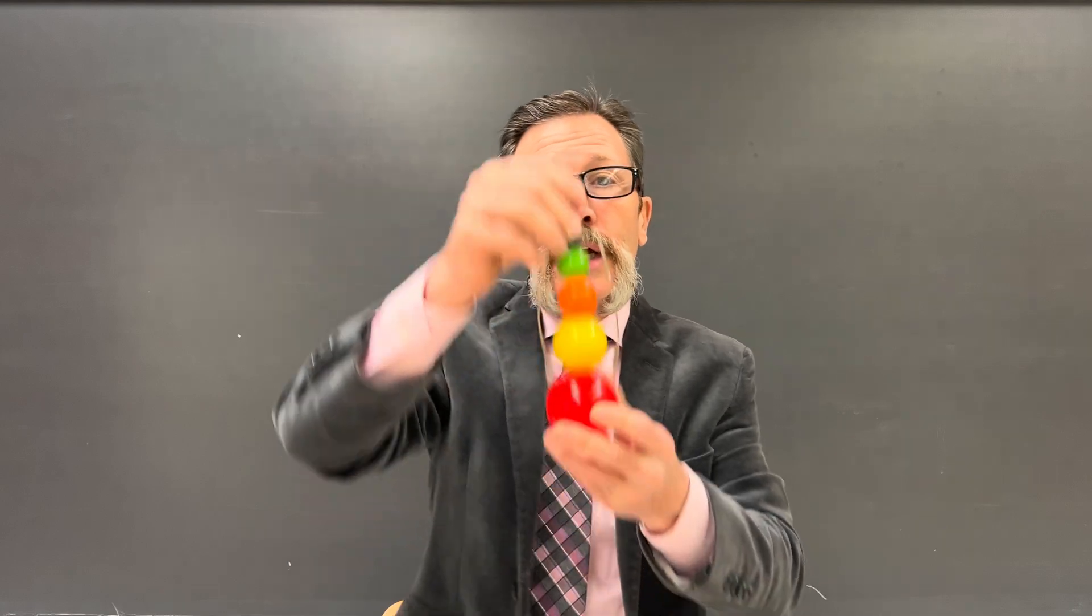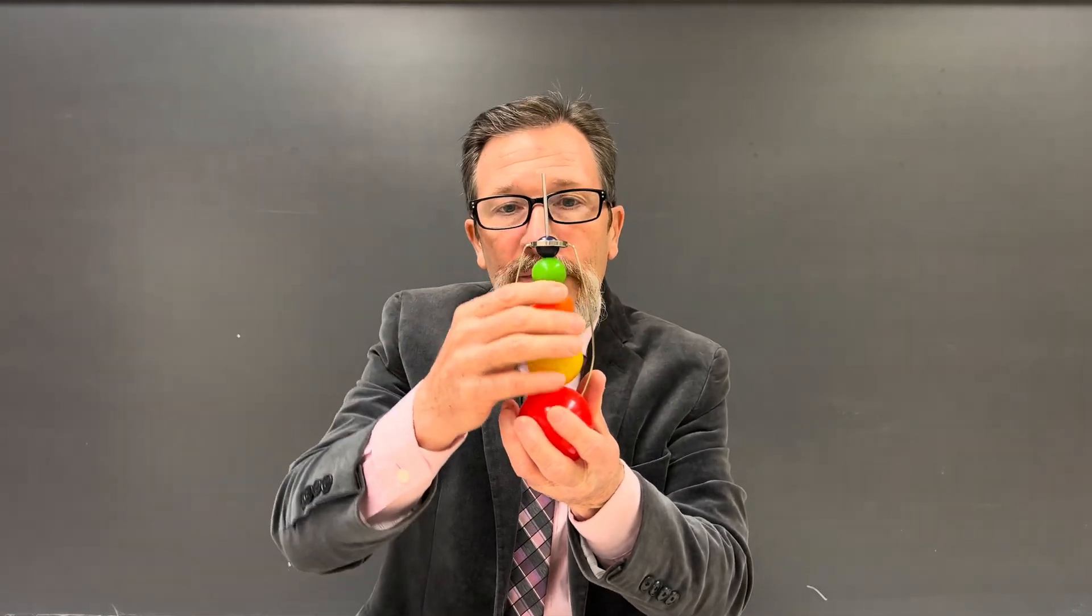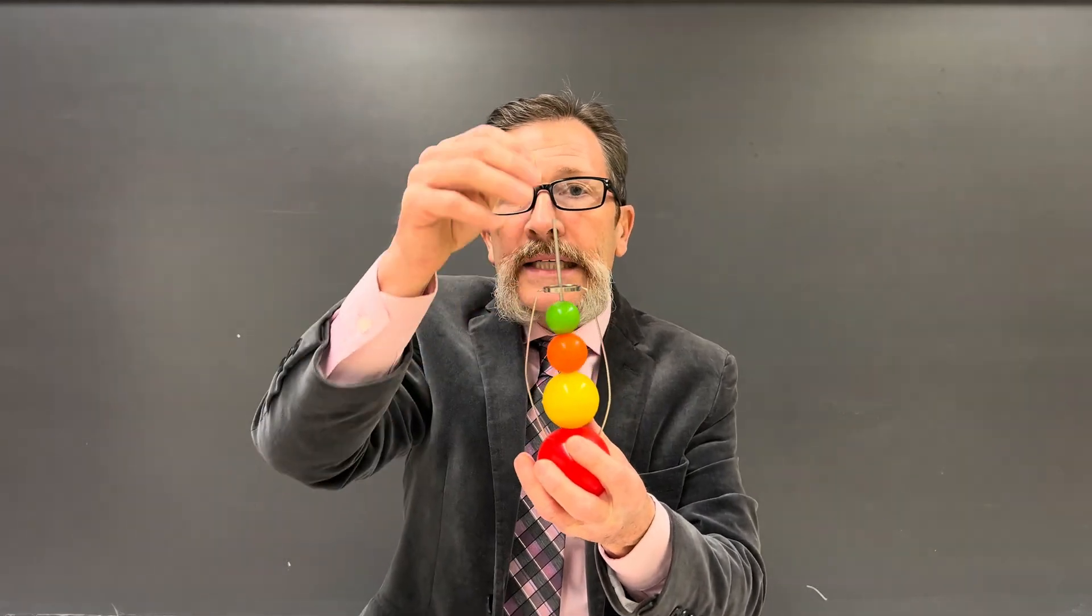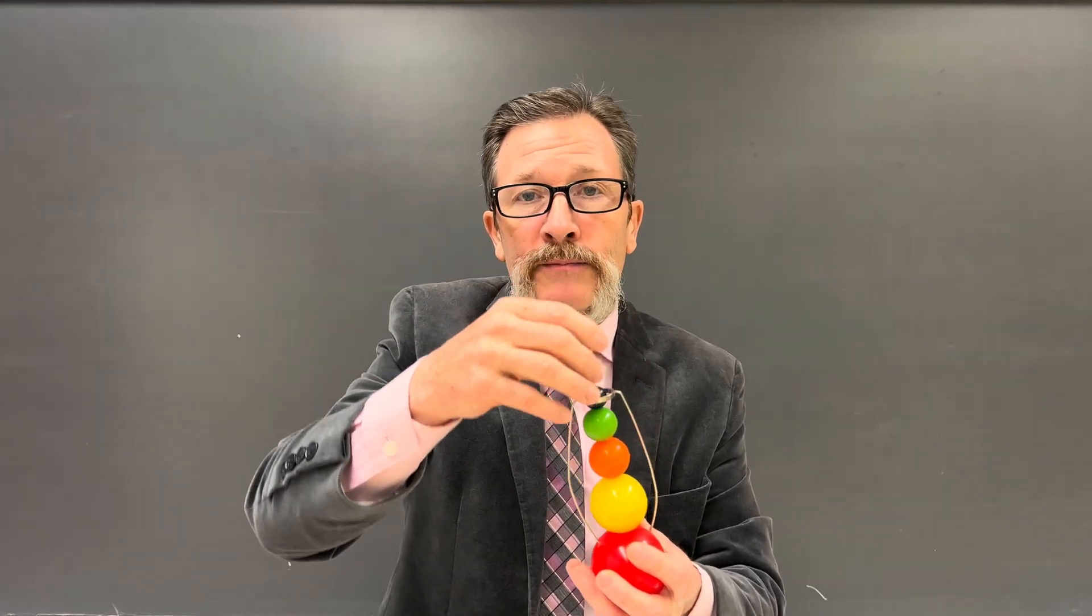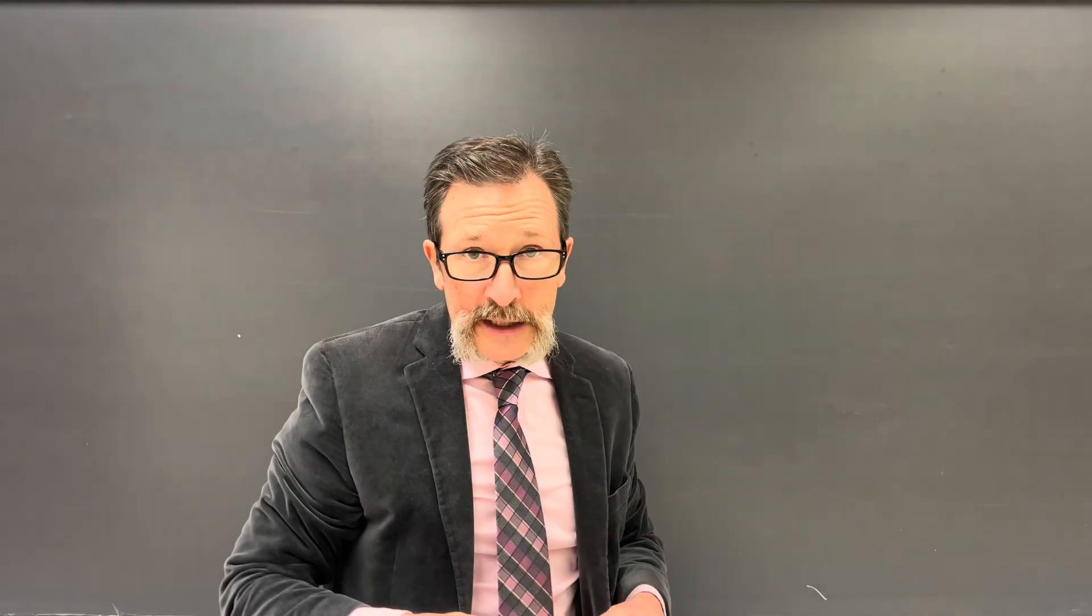And then the third explanation is when this ends up hitting the ground, all of these are going to go down, but only this blue one, this smallest one, is going to be able to go off the top. So those are our typical student explanations.